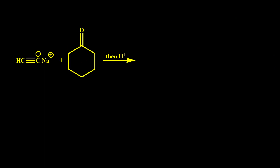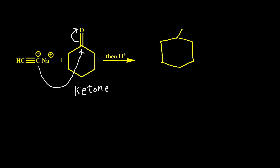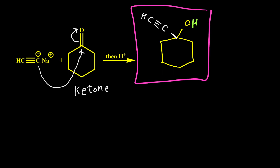Here is another example. This negative carbon can attack the carbonyl group and push the pi bond to the oxygen. This compound is a ketone. Then we get this intermediate — the double bond O converts to O negative — and we have a new bond between this carbon and the alkyne. By acidifying this mixture the negative oxygen turns to OH, giving us our product for this reaction.